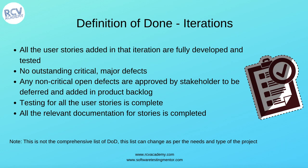You shouldn't have any outstanding critical or major defects for any of the user stories you have picked. If there are any non-critical open defects, they should be approved by the stakeholders to be either deferred or put into the product backlog to be looked at in later iterations or cycles.